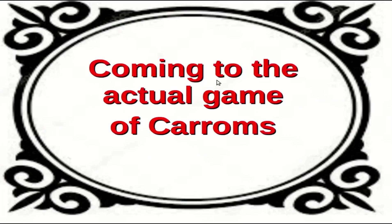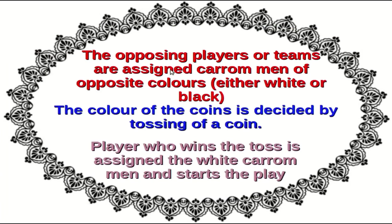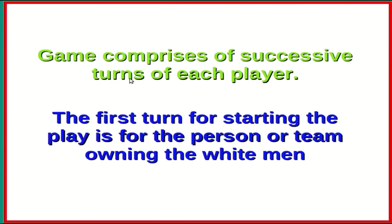The game is played either in singles mode with two opponents sitting on opposite sides of the board, or in team mode wherein two teams with two members each play, with members of the same team sitting on opposite sides. The opposing players or teams are assigned carom men of opposite colors — white or black — decided by tossing a coin. The player who wins the toss is assigned the white carom men and is entitled to start the play, meaning he has the first strike.